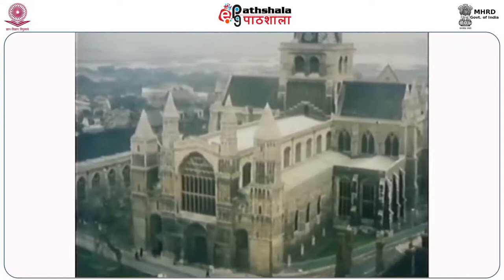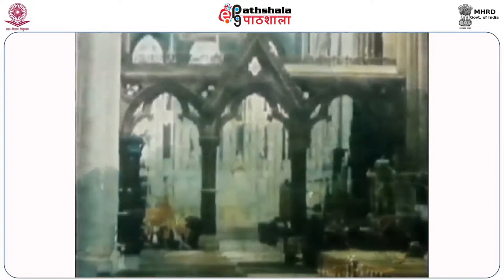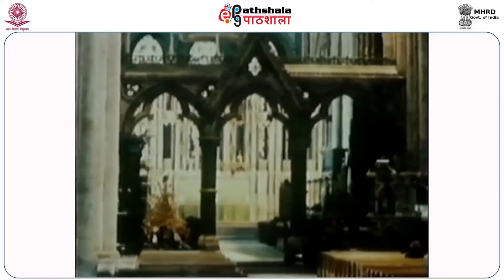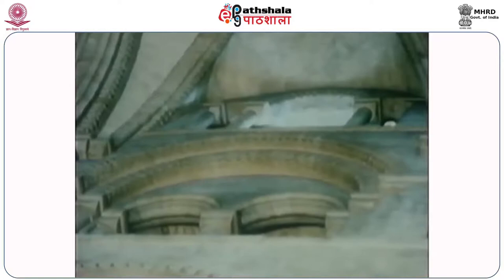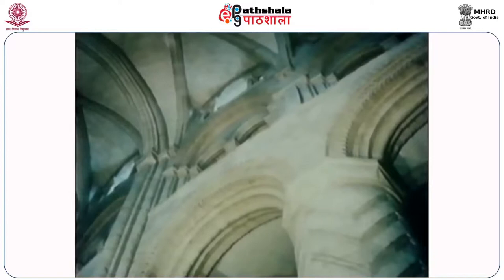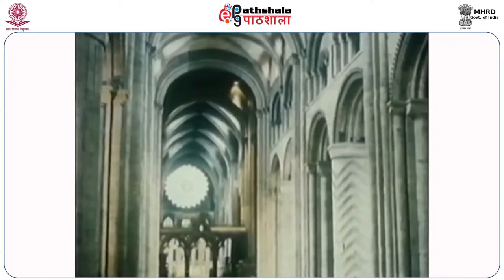This is Durham Cathedral. If we look closely, we can see the same Norman details: a solid mass of stone, round-headed arches, sturdy columns, zigzag patterns, and blind arcading. A castle of God to rival those of the King. Just as King William built Battle Abbey as a thanksgiving to God for his success, his barons followed his lead and built churches and monasteries throughout the land.